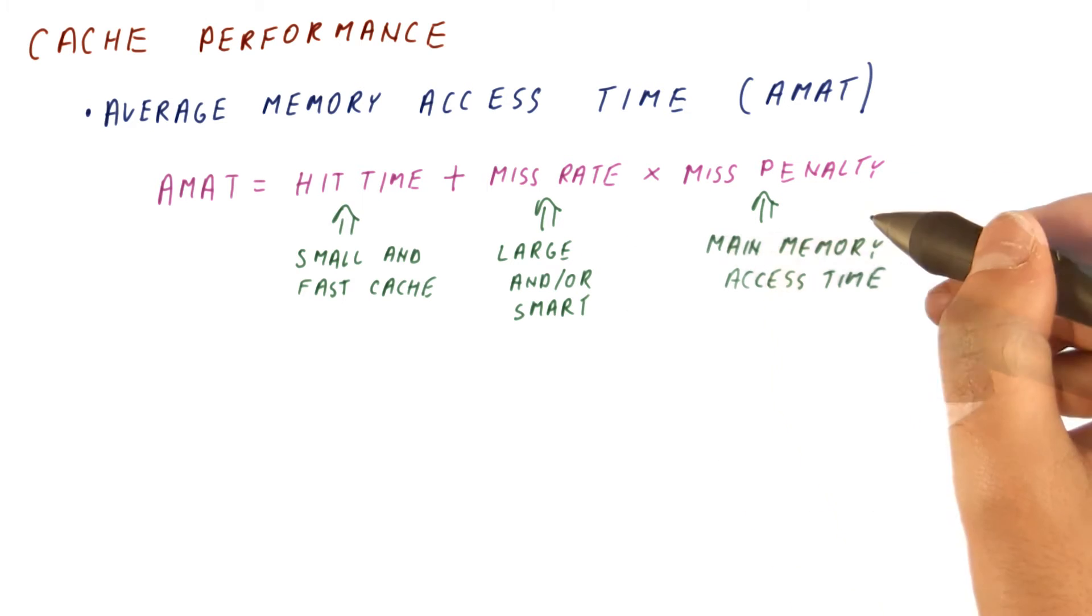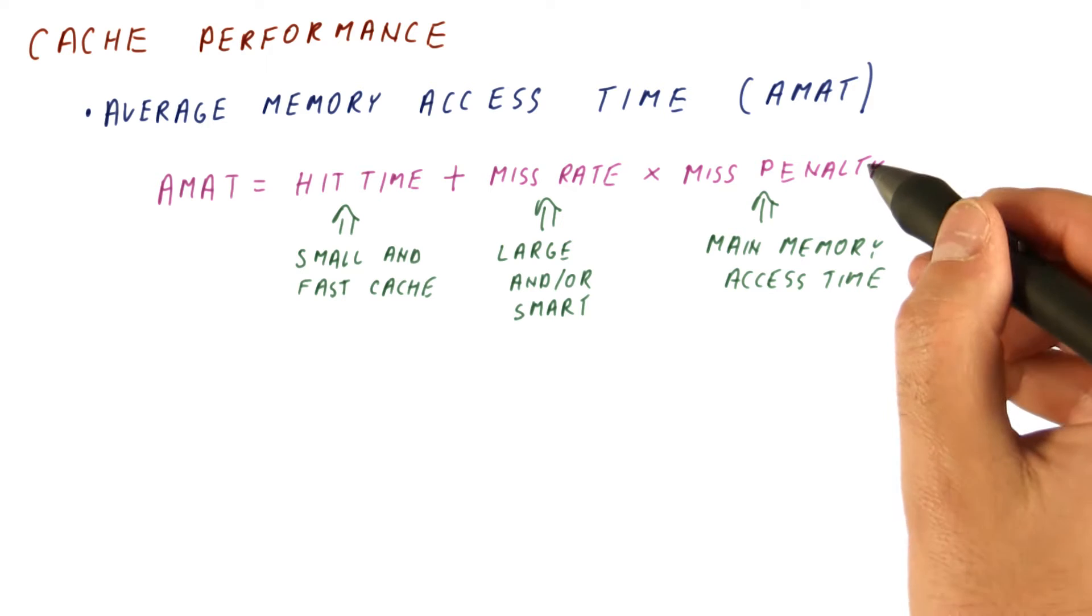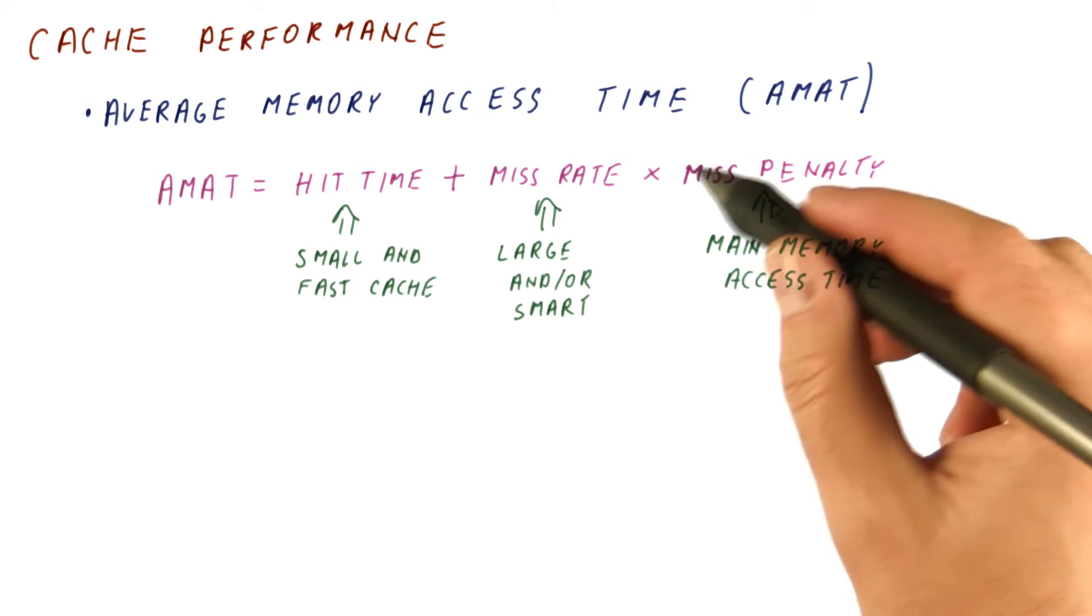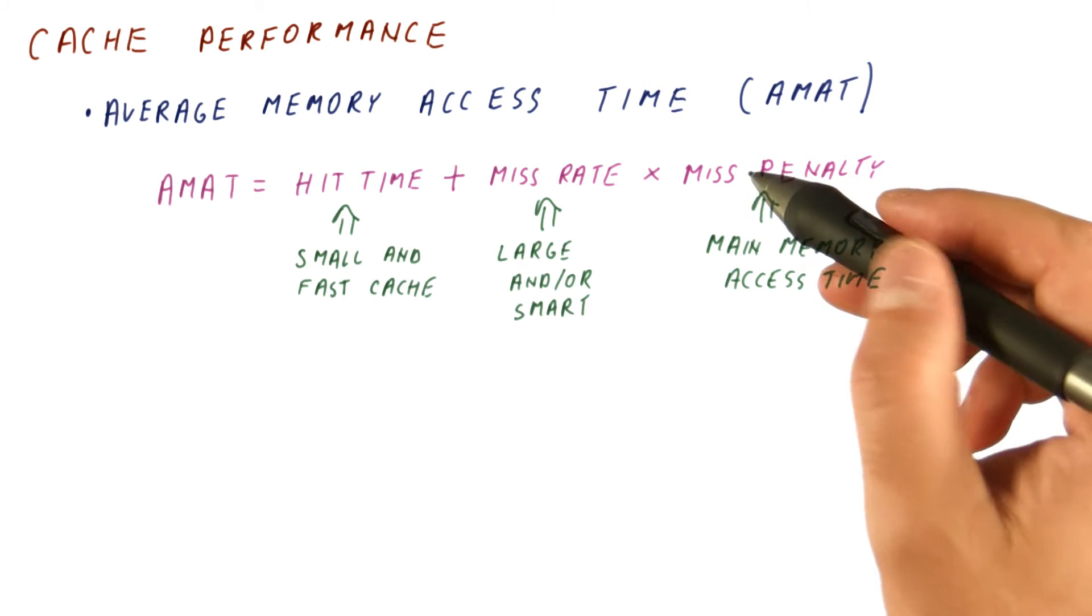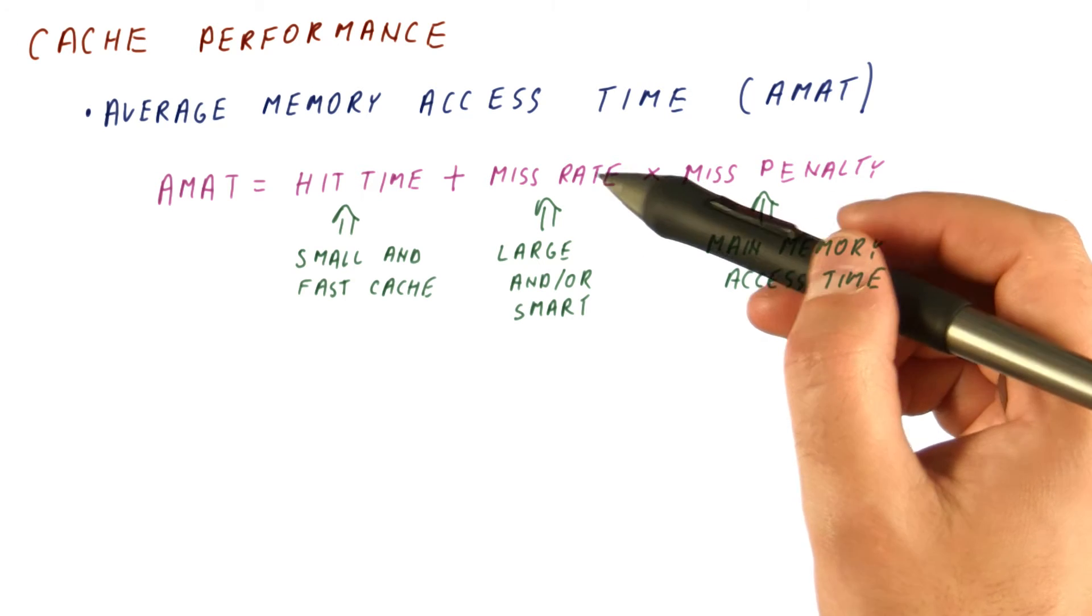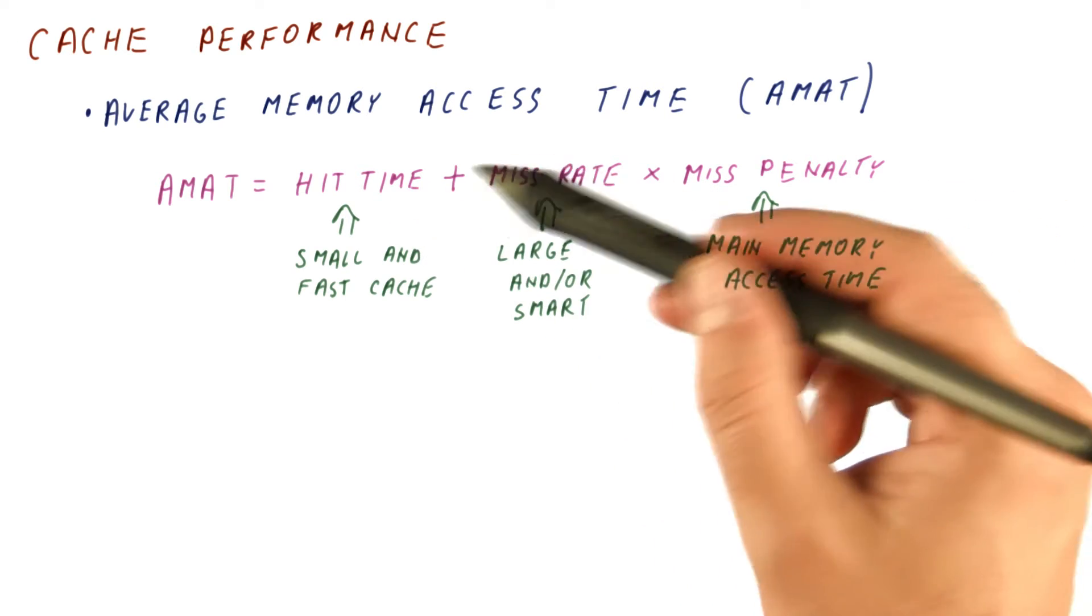The miss penalty for simple caches is simply the main memory access time. This is going to be very large, usually tens or even hundreds of processor cycles. So really, when we're designing caches, we're trying to balance the hit time and the miss rate.